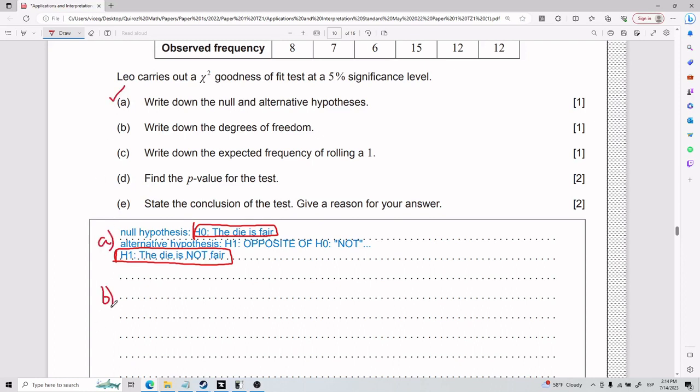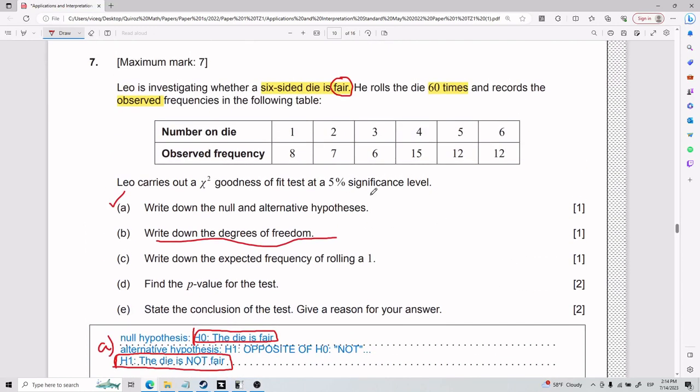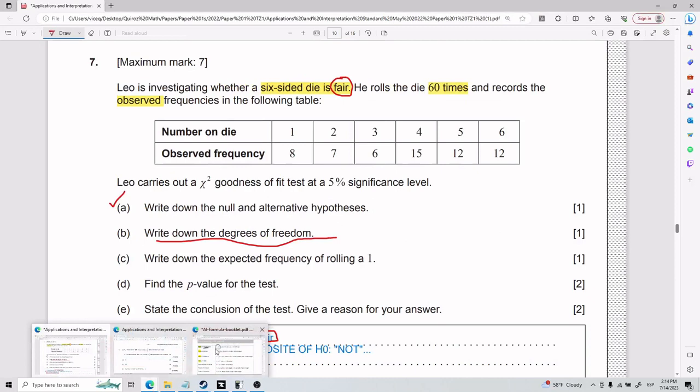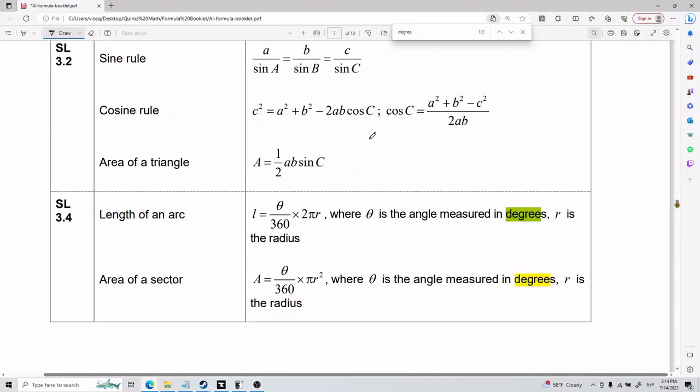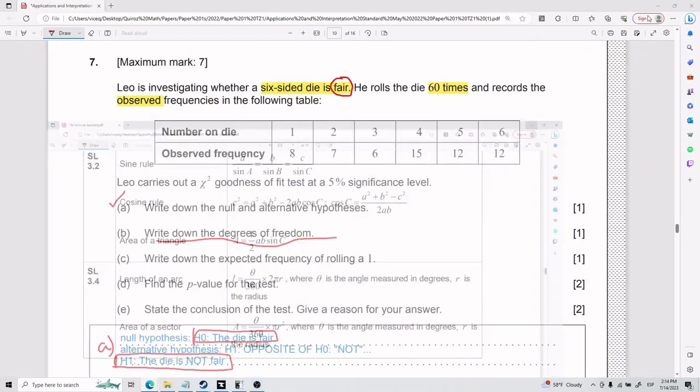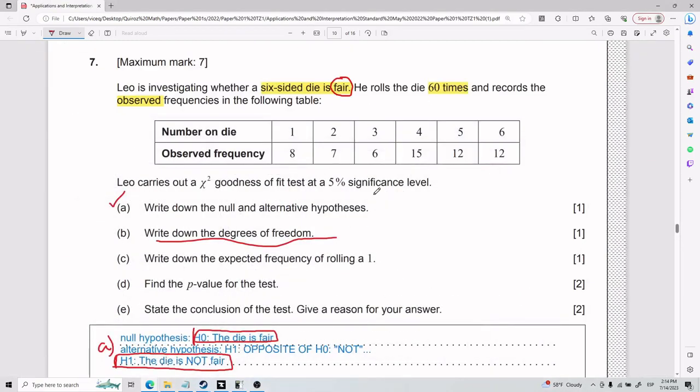For part B, we need to write down the degrees of freedom. Degrees of freedom, what the hell is this? I'm not sure if it's in your formula booklet. It's not in your formula booklet. Wow, that's mean. This is the kind of thing you need to memorize.